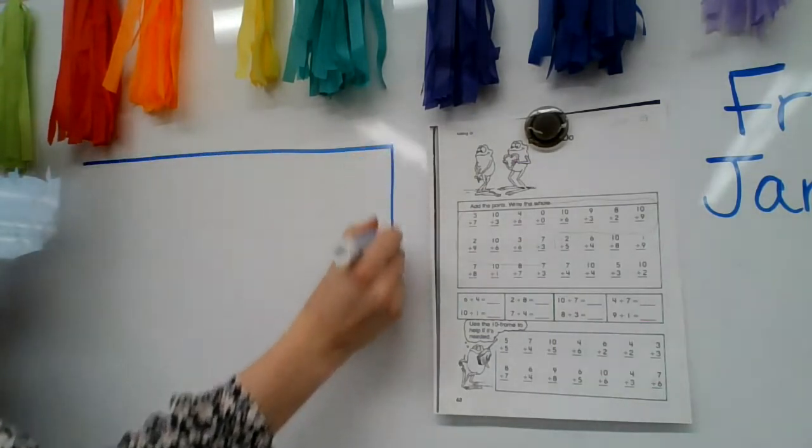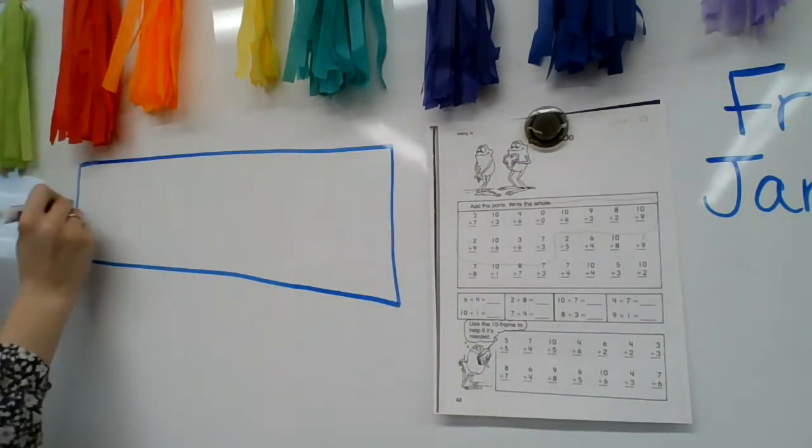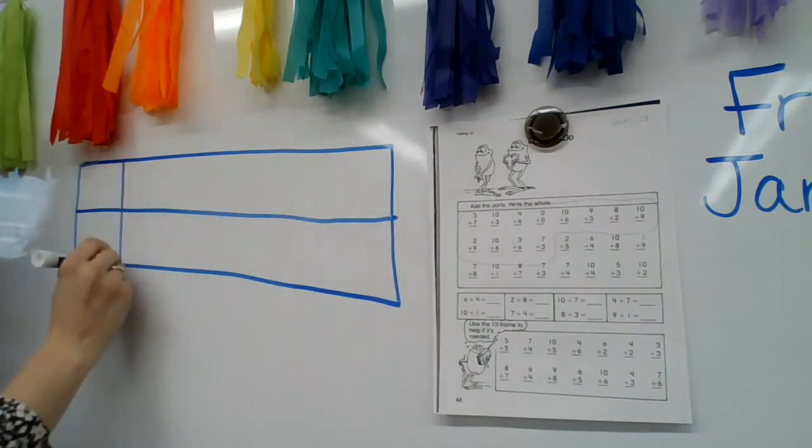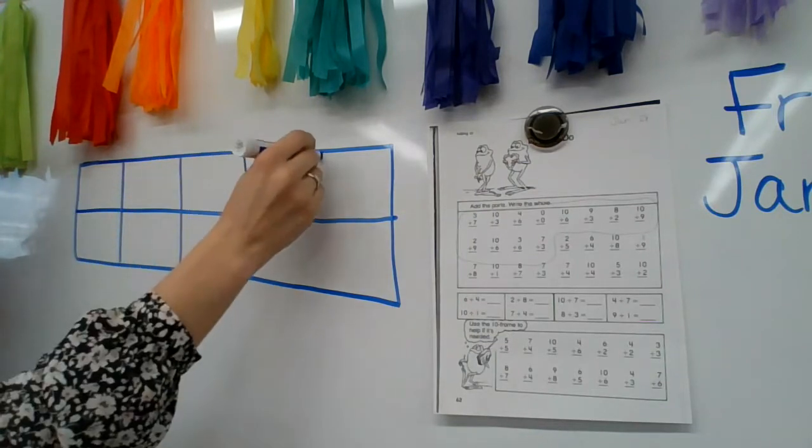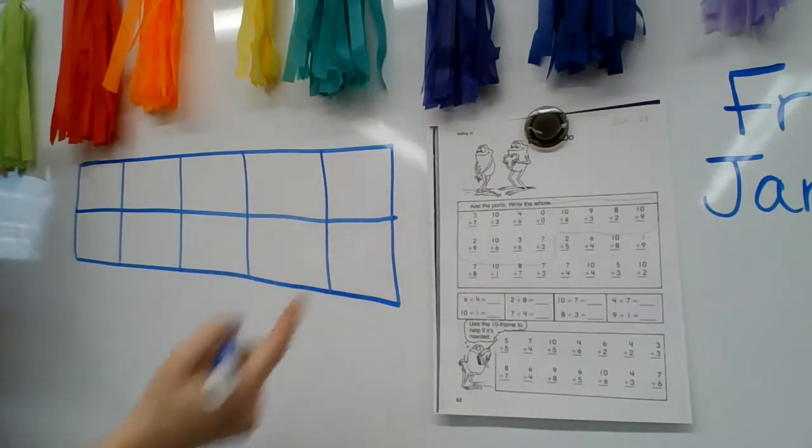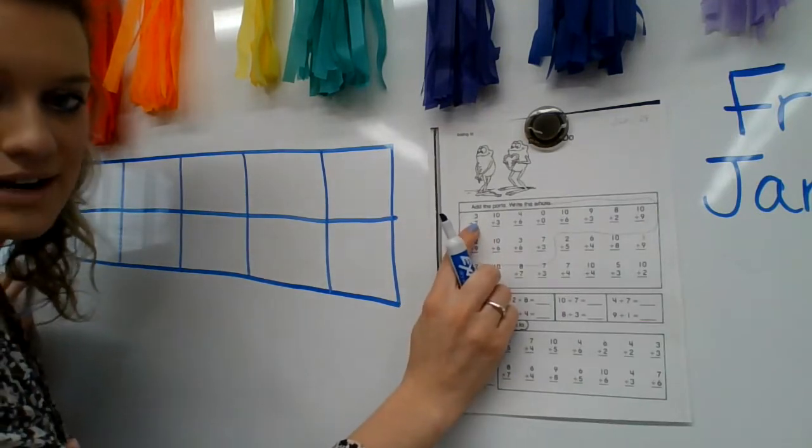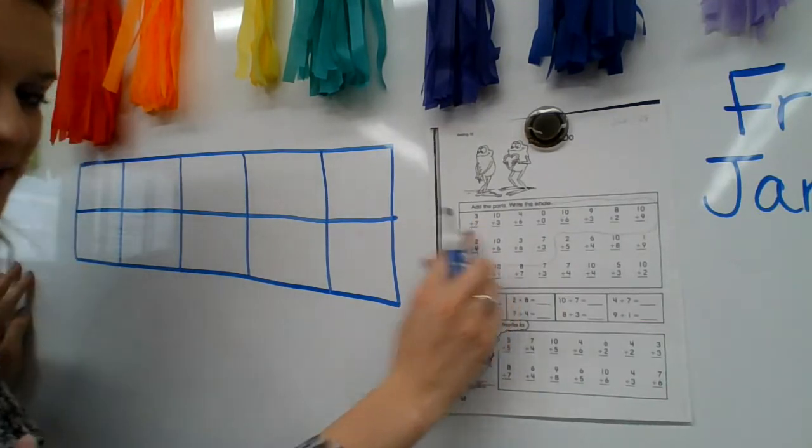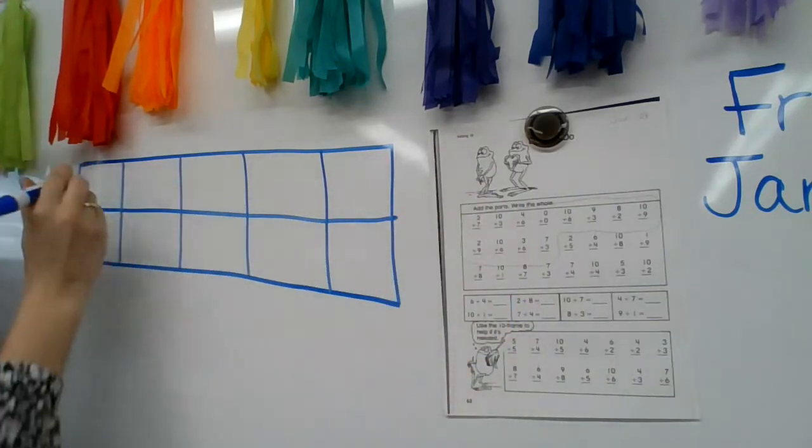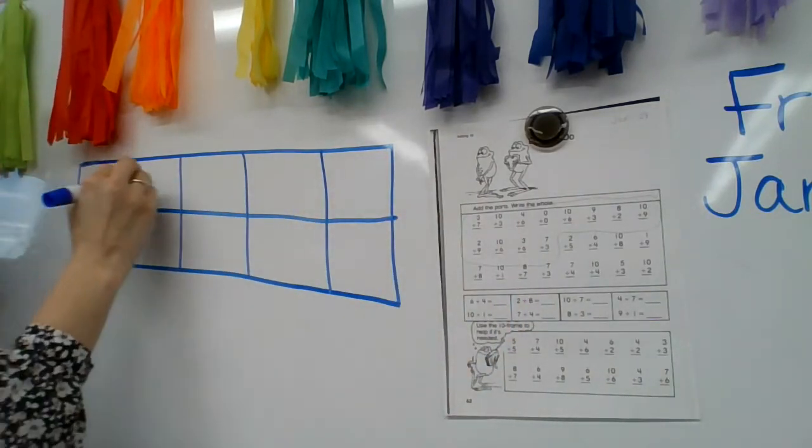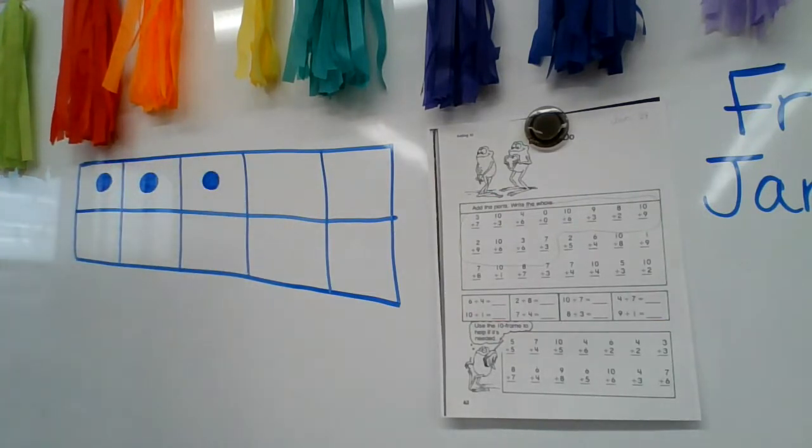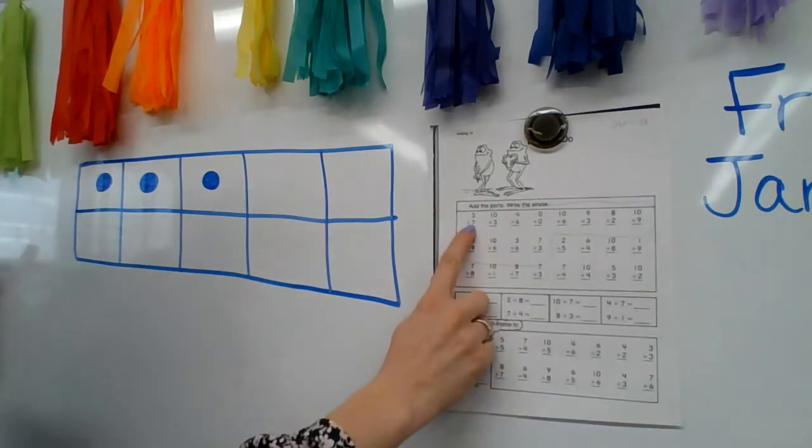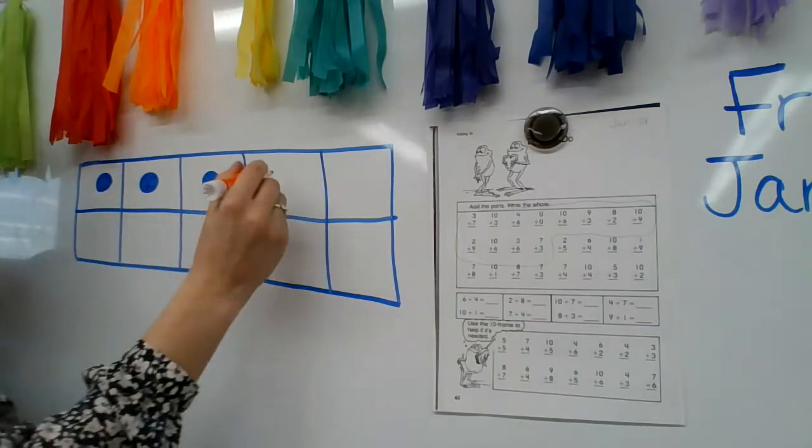Now remember a 10 frame is kind of like this big box and we put 10 squares in it. One, two, three, four, five, six, seven, eight, nine, 10. And it represents the number 10. We can put little dots in these squares to see how close we get to filling it up. So if I have three plus seven, that means I have three that I started with. Right? I had three that I started with and I'm going to switch colors here. And how many more did I add?